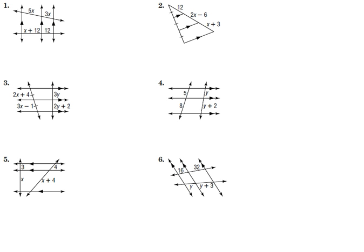So for number one, here we have three parallel lines, two different transversals, and each of these segments are proportional to the corresponding side. So we can set up the ratio of 3x over 5x and have that equal to 12 over x plus 12. Now, notice 3x over 5x, we could cross-multiply, but let's simplify that first. The x's cancel. 3 over 5 is equal to 12 over x plus 12.